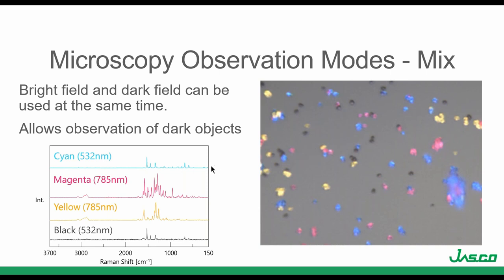We have a mixed observation mode where bright and dark field are combined, so everything can be observed — the dark areas as well as the colored ones. In this mode, using the auto stage, we can go exactly to the point where we want to make the measurement. You can see the Raman spectrum of the yellow particle, the magenta one, or black — those are measurements made using different laser lines.